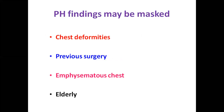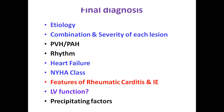Sometimes PH findings may be masked — a patient may have Class 3 dyspnea but no clinical findings of pulmonary hypertension. This should not reassure you — whenever there is pulmonary venous hypertension there has to be pulmonary arterial hypertension. It may be missed in patients with chest deformities, previous surgery, elderly, or emphysematous chest. In the final diagnosis, state the etiology, combination and severity of each lesion, pulmonary venous and pulmonary arterial hypertension, rhythm, whether heart failure is present, NYHA class, any features of rheumatic arthritis or infective endocarditis, LV dysfunction, and precipitating factors. Thank you.